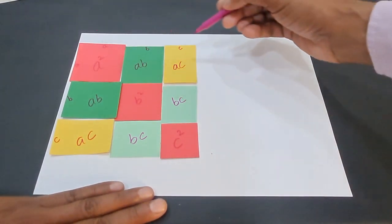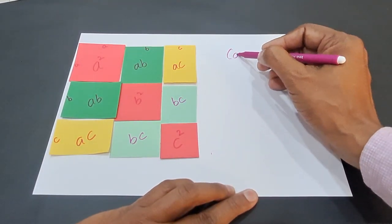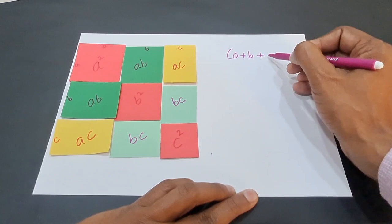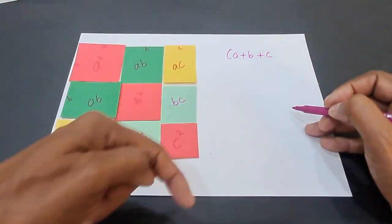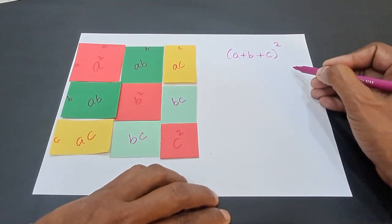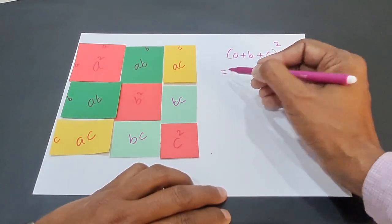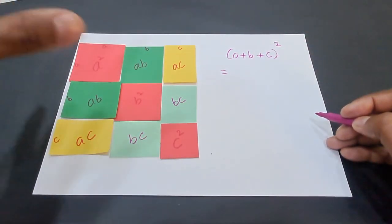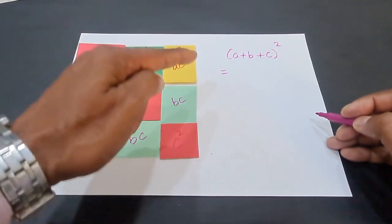You can see the side of this square is actually A plus B plus C. And if you want to find the area of the complete square, it will be the square of the side, that means this one. And this entire area is divided into 9 parts. I am going to add all the 9 areas.